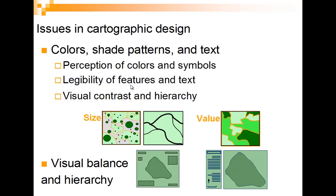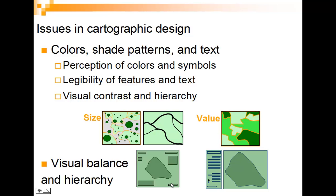We also have visual balance and hierarchy. If we put something in the middle at the top, that's going to be more important. How does our eye read? Our eye reads from the upper left, over and over. So if we put stuff in the upper left corner, that's probably something we want the person to see. Something in smaller text down in the bottom right might be some disclaimer information.